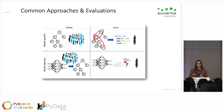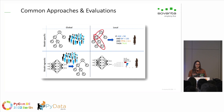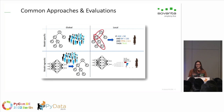Global explainability explains the impact across the whole dataset, while local explains the impact for a single prediction. With a decision tree, global explainability takes the whole tree into account and can explain each prediction. With local explainability, you only use one path of the decision tree to explain a single prediction.